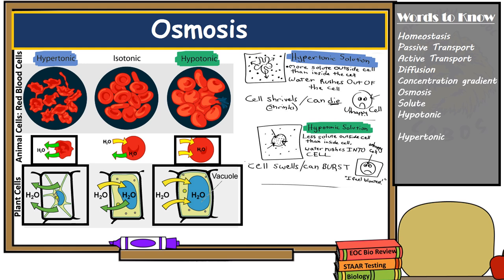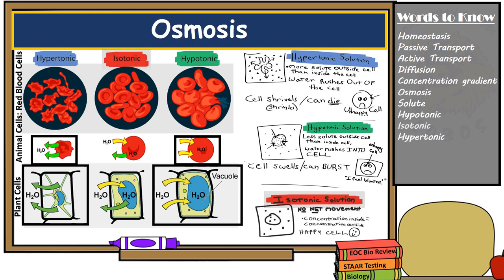This isn't always the case — cells normally are maintained in a balanced environment where solutions are of equal concentration both inside and outside the cell. We call these isotonic solutions. Isotonic solutions are a balanced environment in which equal amounts of water move into and out of the cell, allowing the cell to maintain its healthy shape, as seen in these red blood cells and this plant cell.